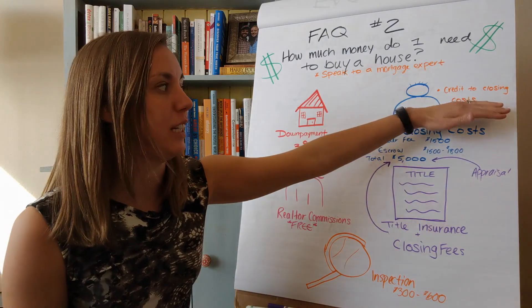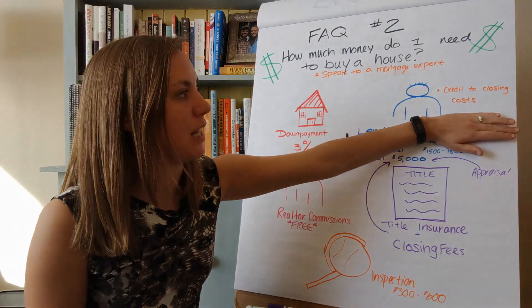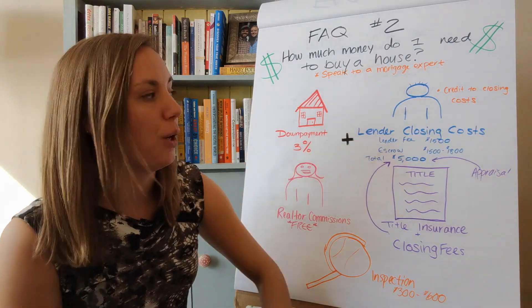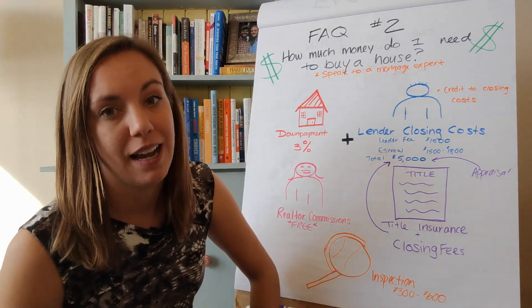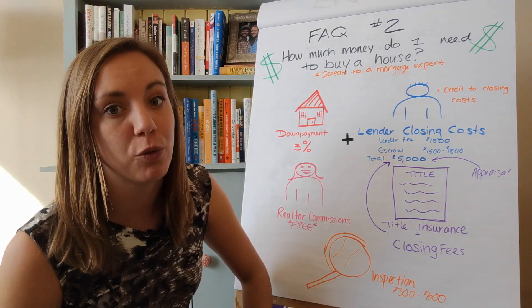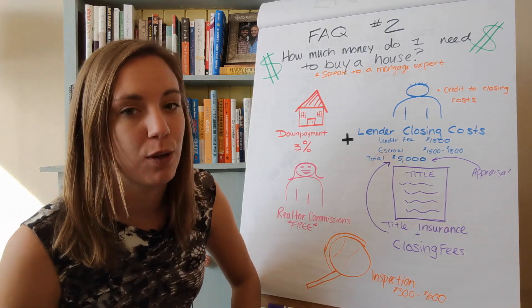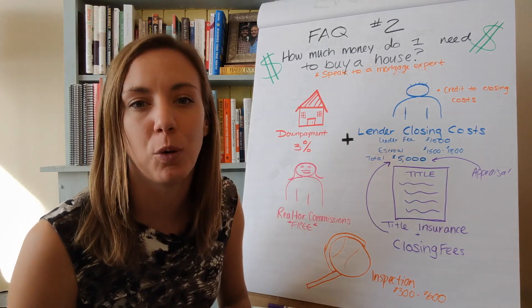Now you can potentially, if you have really good credit or depending on the lender, sometimes get a credit towards closing costs. As an example, Chase right now has the DreamMaker program, and if you have really good credit, they'll offer you a great rate and a credit towards your closing costs to help make it a little bit more in reach.